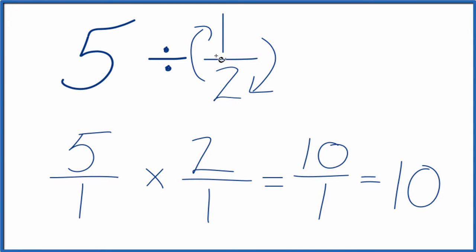So we divide 5 by 1 half, we end up with 10. So to recap, we put 5 over 1, and we multiplied instead of division. So we multiplied by the reciprocal of 1 half, that gave us 10 over 1, which is just 10.